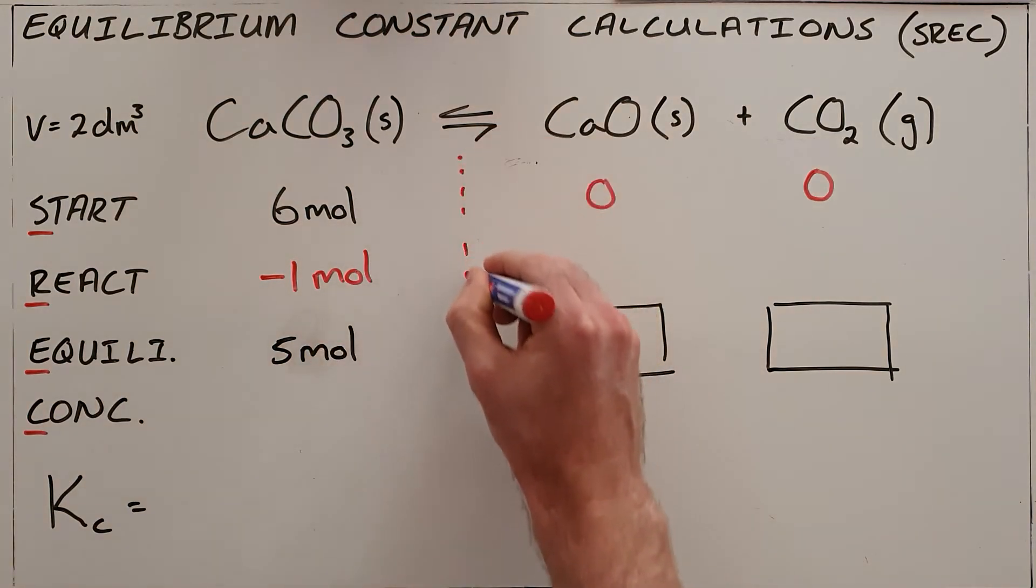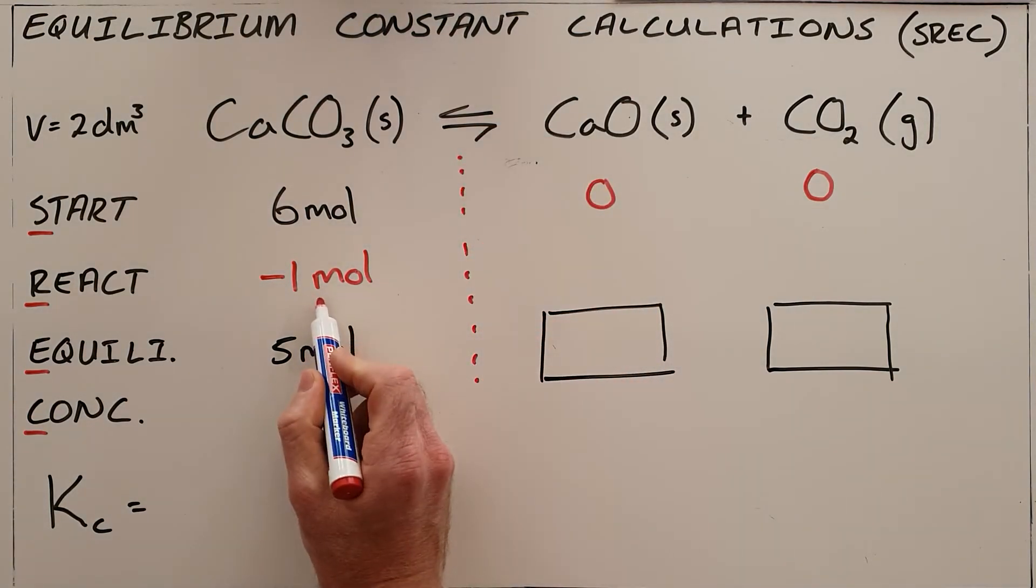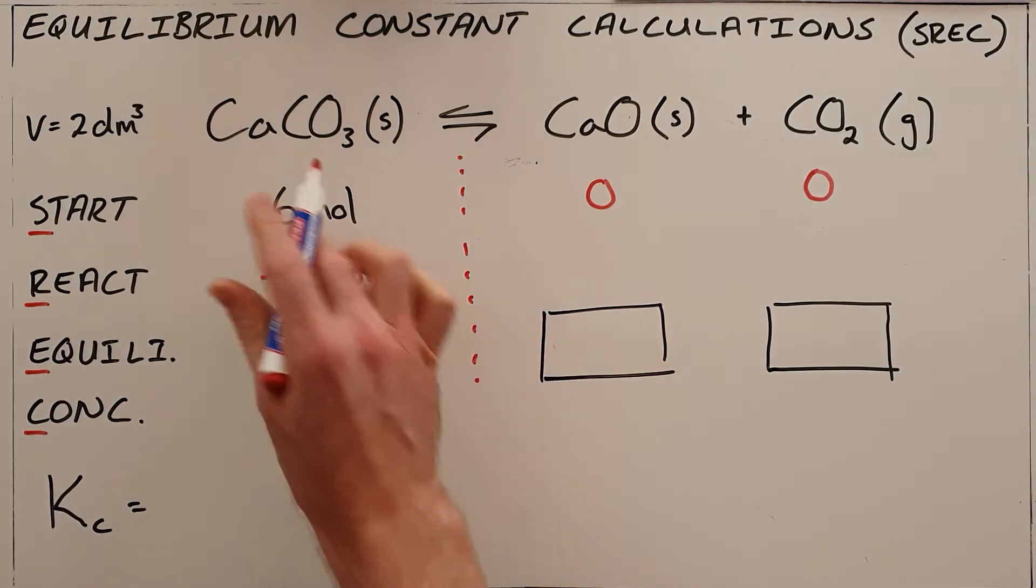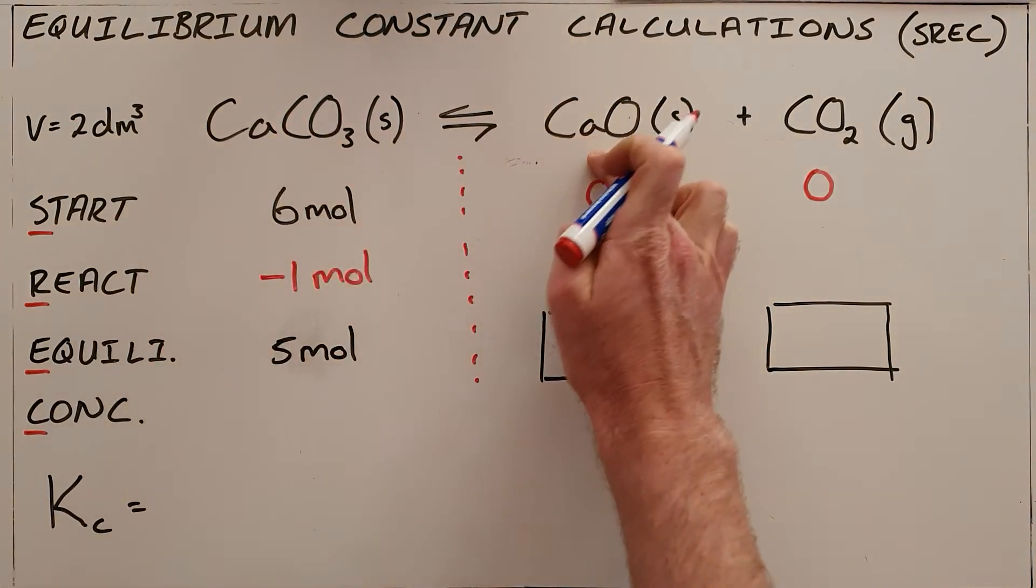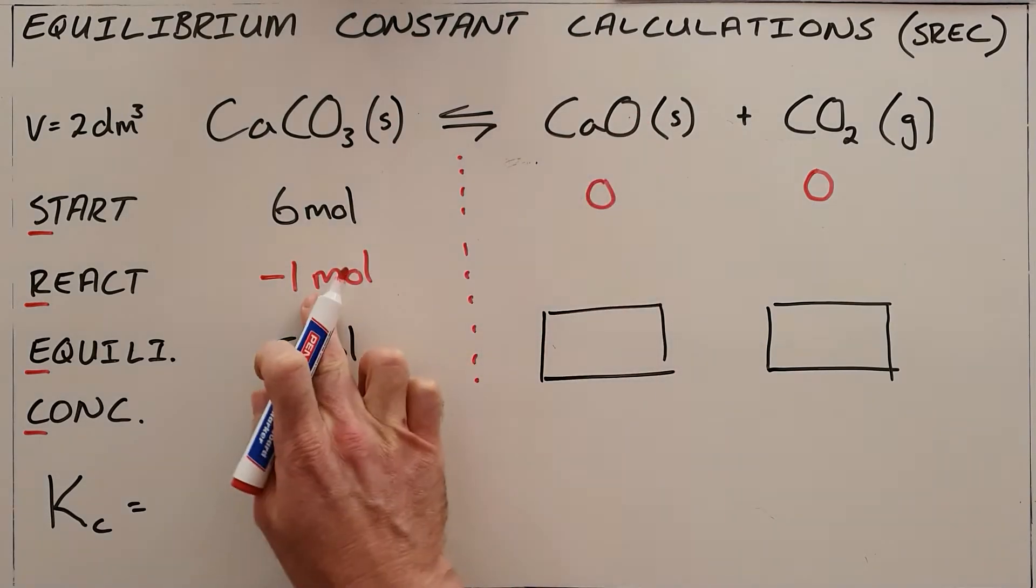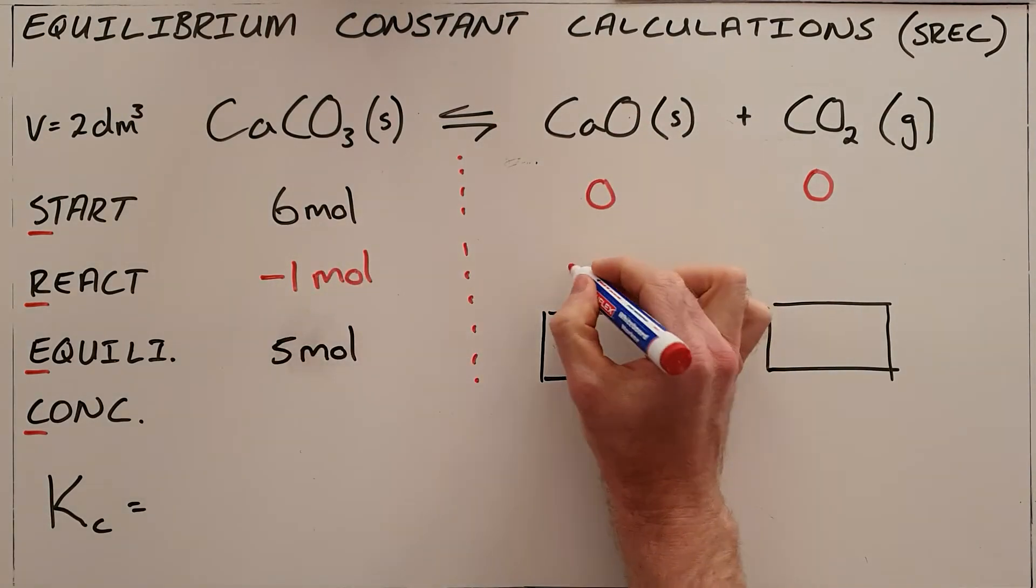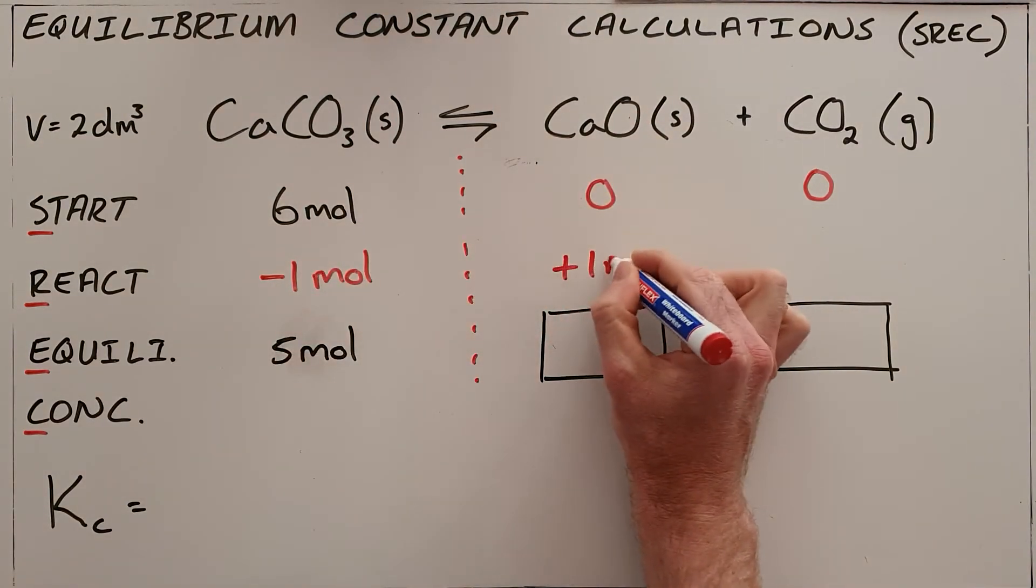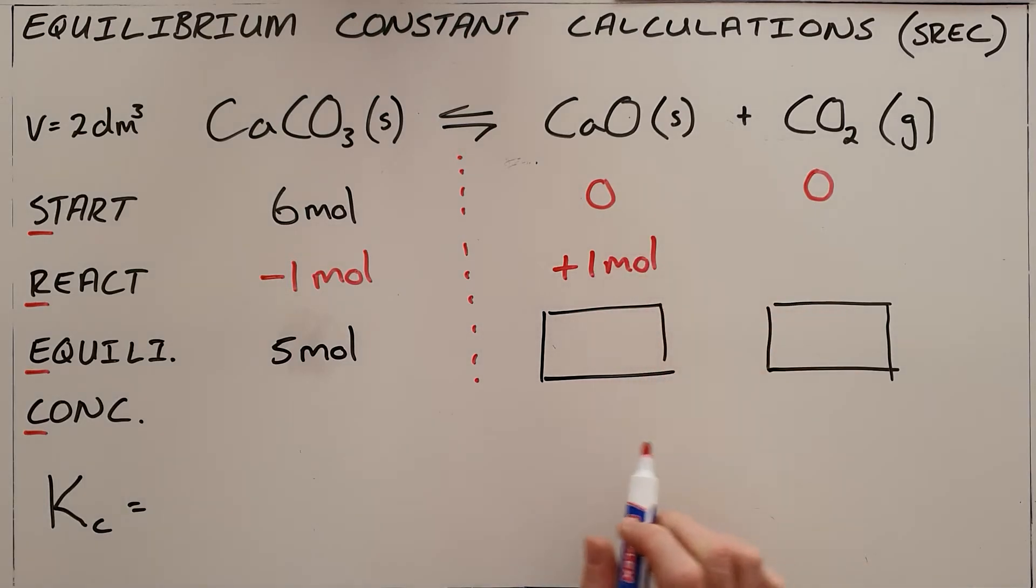Now we know that if we used 1 mole of calcium carbonate, since the ratio of calcium carbonate is 1 to 1, if we used 1 mole of calcium carbonate, that means that we must have formed 1 mole of calcium oxide.